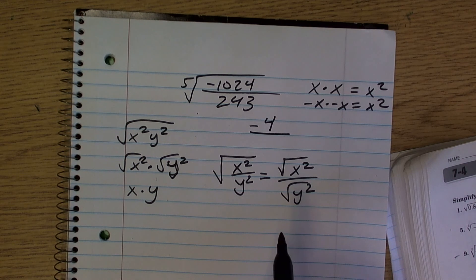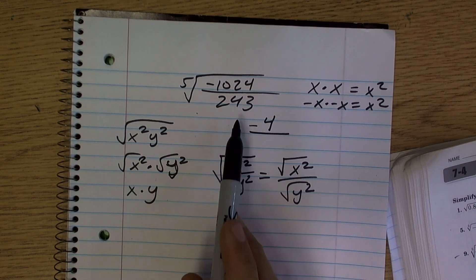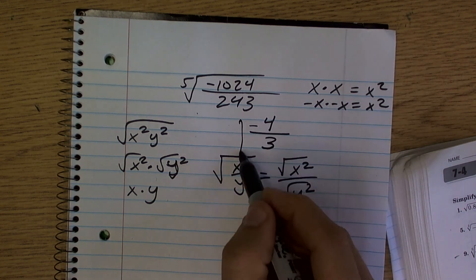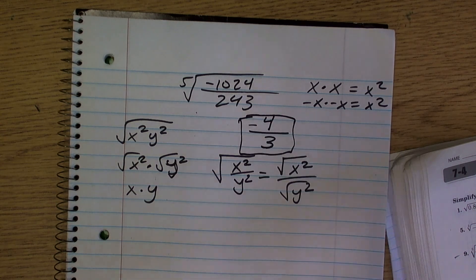What number multiplied by itself five times gives me 243? That answer is 3. So the final answer for this is negative 4 thirds.